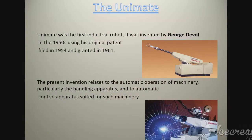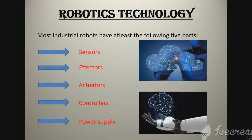The Unimate was the first industrial robot. It was invented by George Devol in the 1950s, using his original patent filed in 1954 and granted in 1961. The invention relates to the automatic operation of machinery, particularly handling apparatus and automatic control apparatus suited for such machinery. Most industrial robots have at least the following five parts: sensors, effectors, actuators, controllers, and power supply.